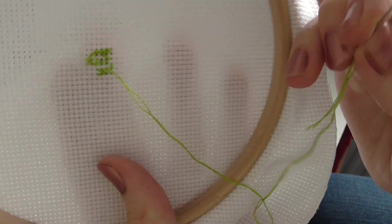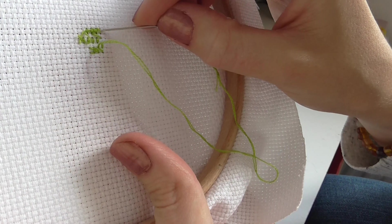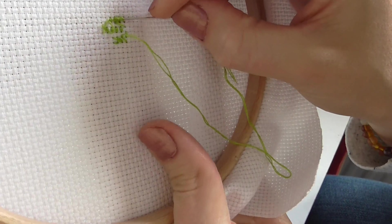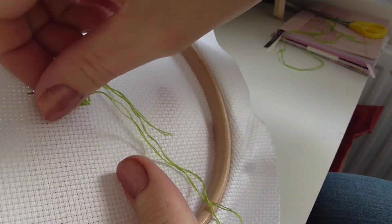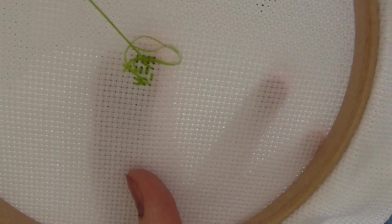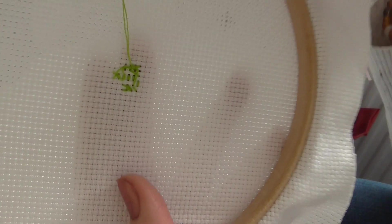There's two ways. You can literally just pop your needle under a few stitches like that and then just pull it through, and that will secure it.